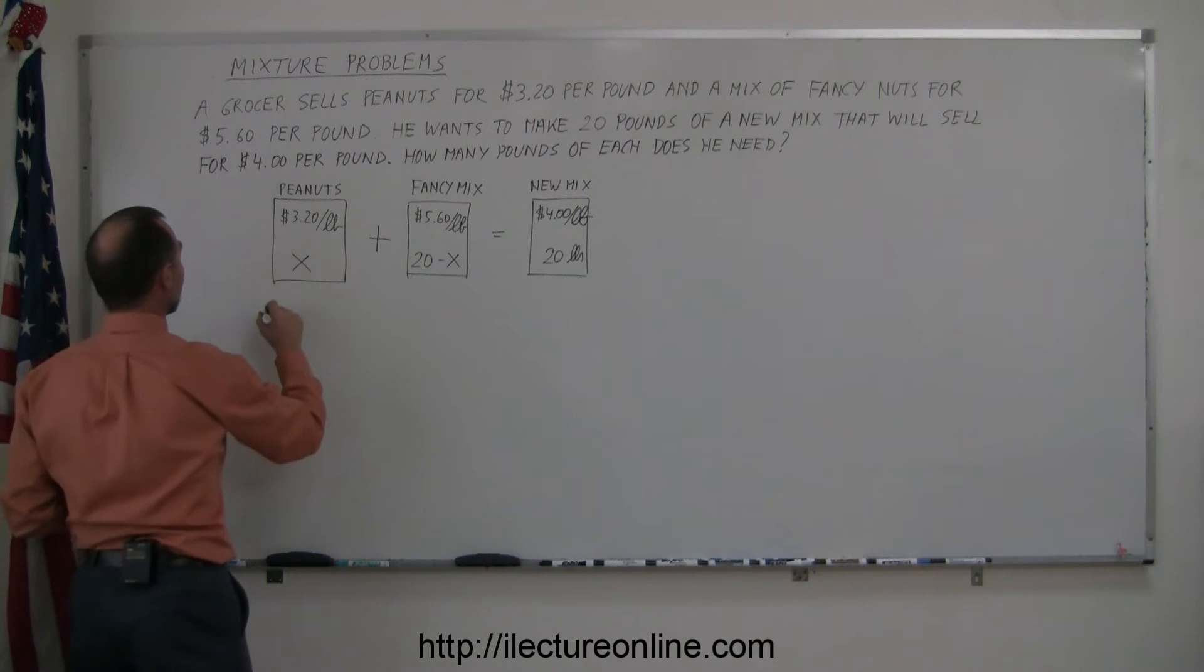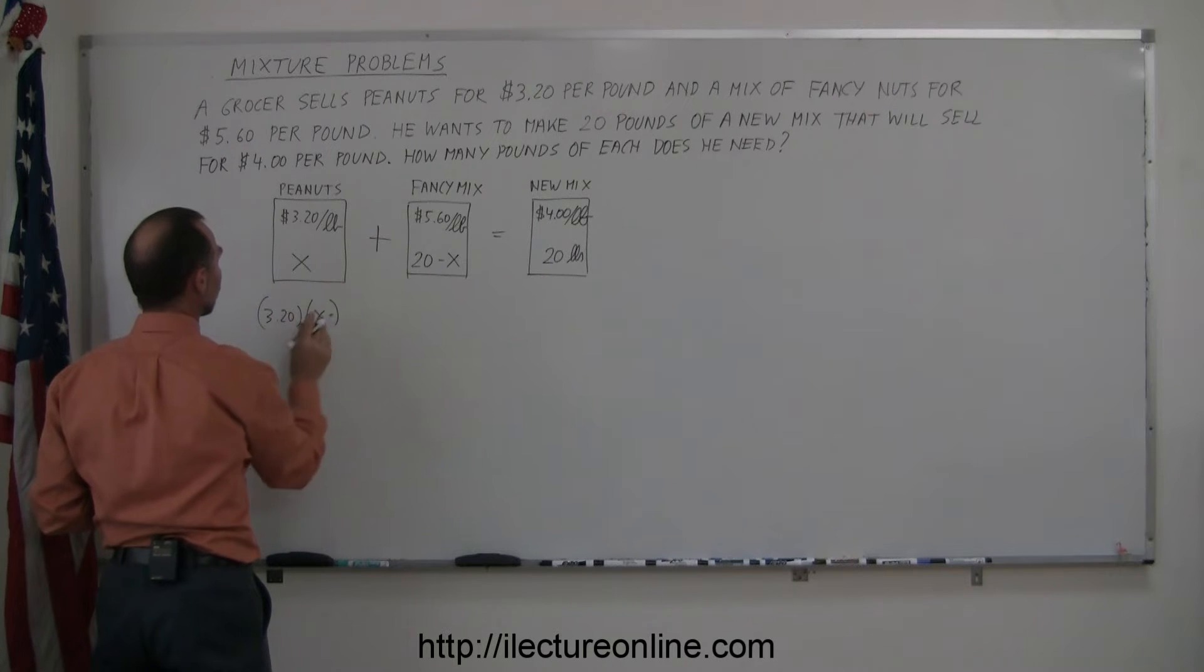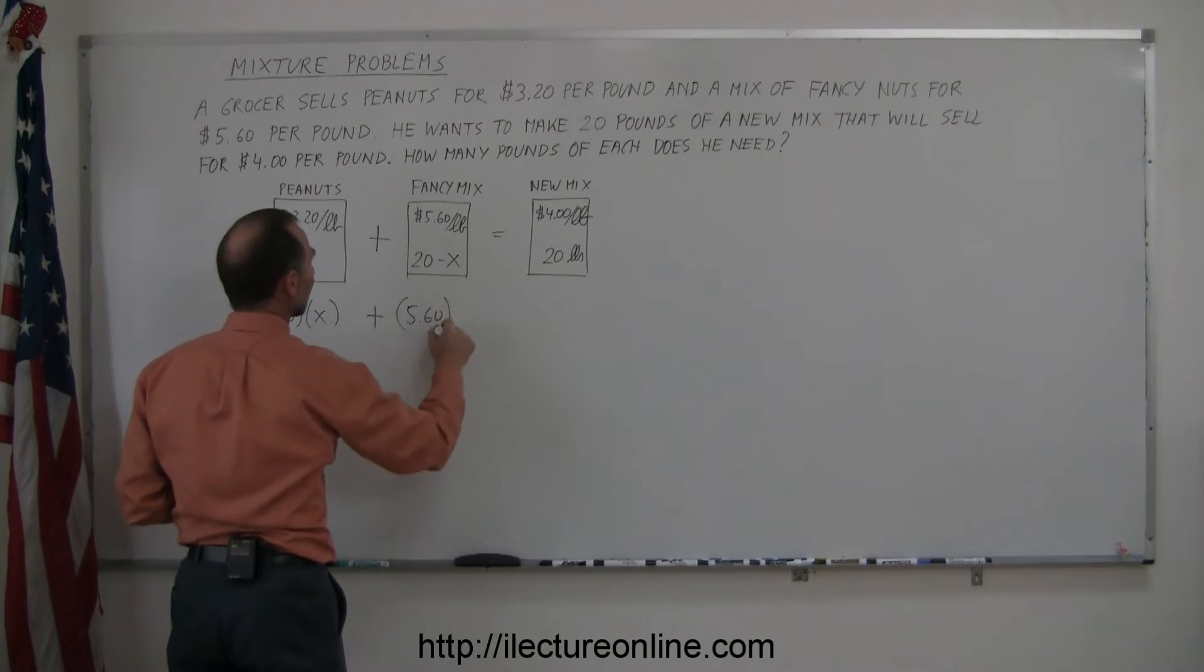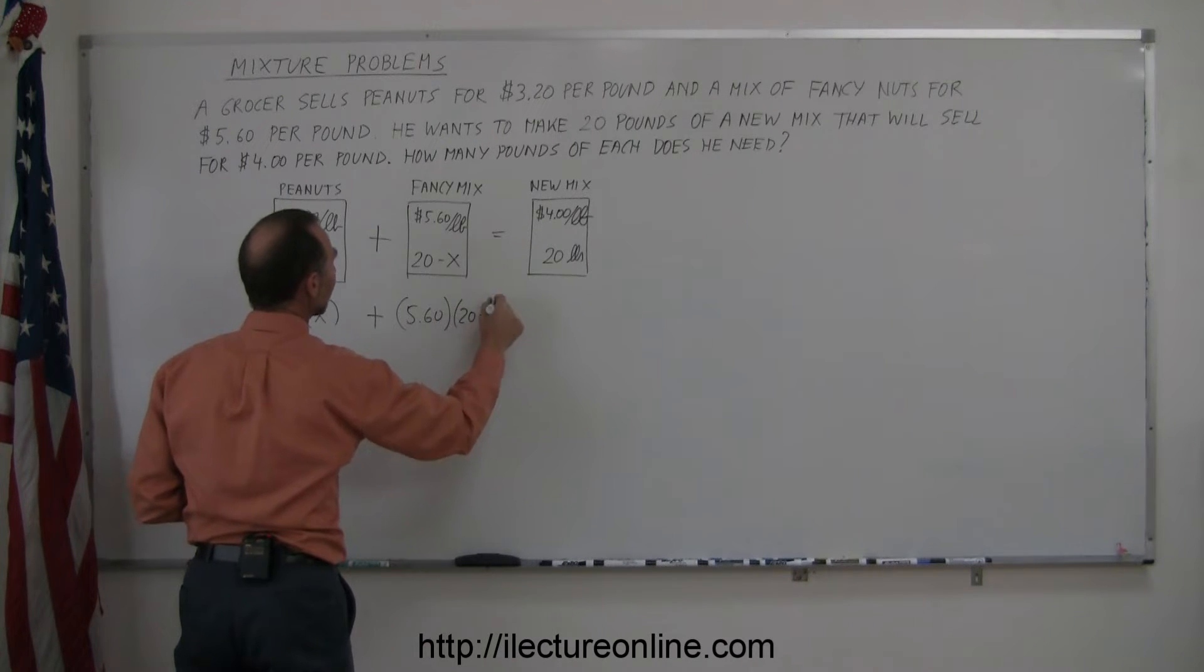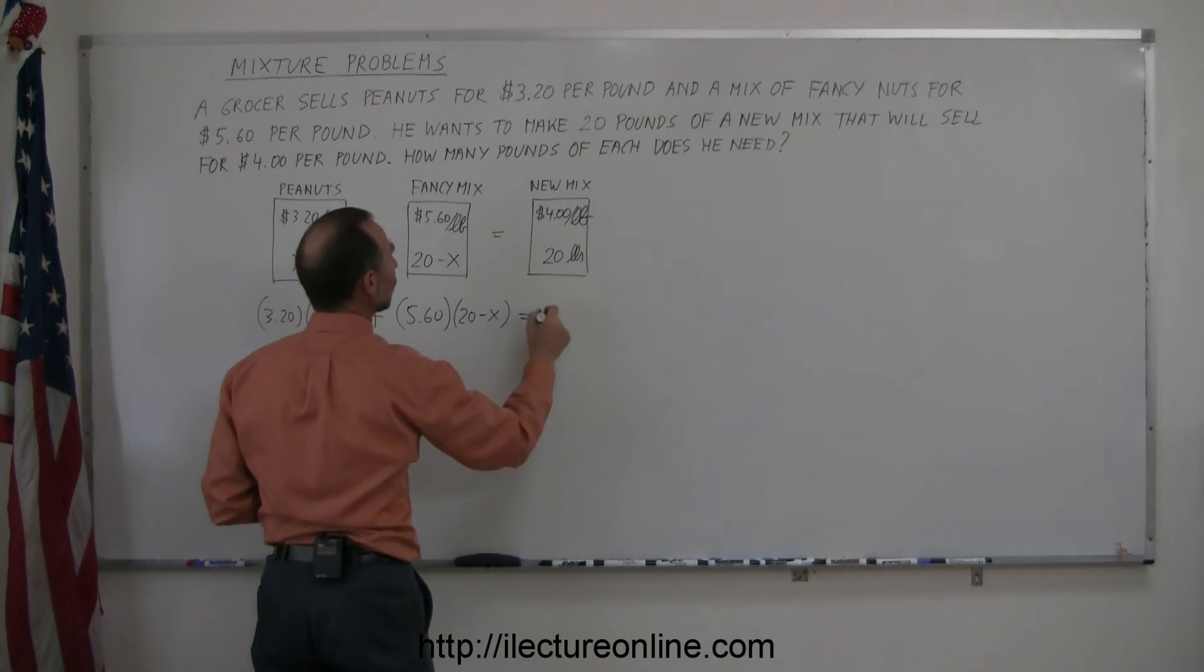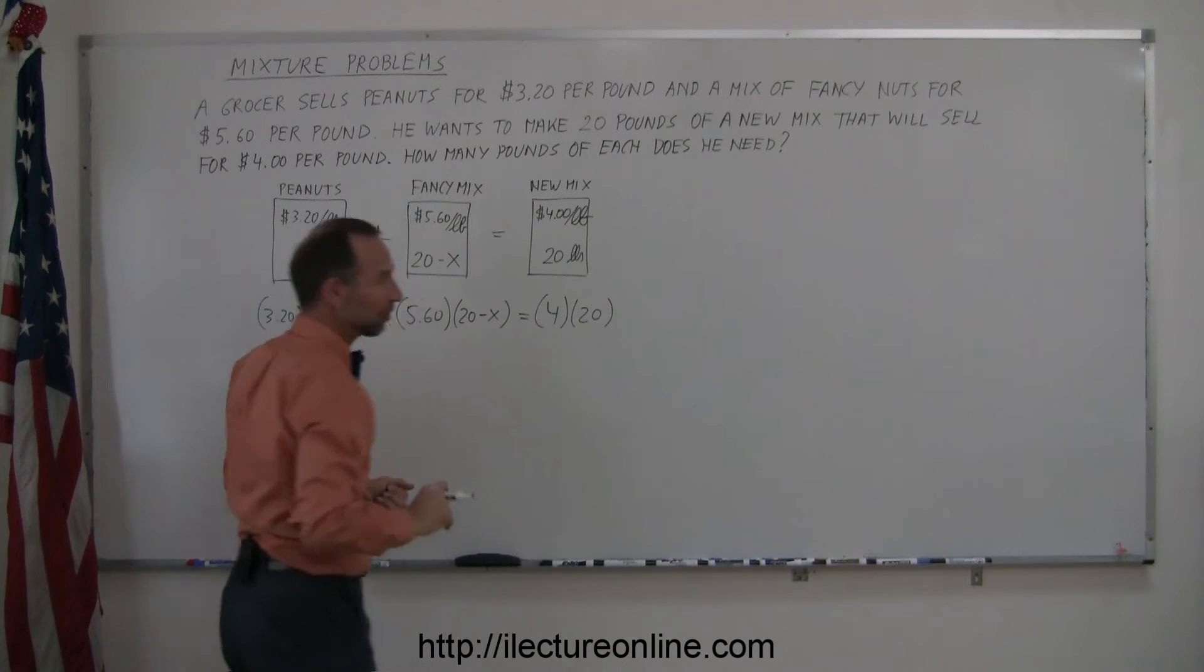So we can write that 3.20 times X, which is the total value of the peanuts, plus 5.60 times (20 minus X), which is the total value of the fancy mix, equals 4 times 20, which is the total value of the new mix.